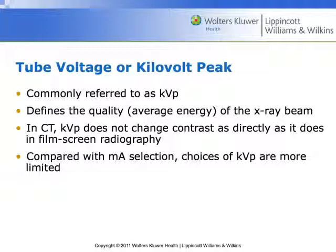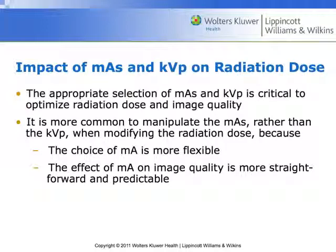KVP in CT can't really be thought about the way we think about KVP in radiography. Typically, KVP is going to be a little limited — we have some buttons that we just click. We say, I want this to be 100 KVP or 120 KVP; on most scanners those are your two choices. Both those parameters are directly related to patient dose.